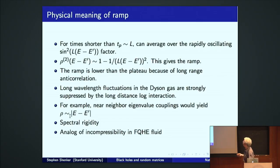Now for time shorter than this break time, we'll call the plateau time L, you can average over this rapidly varying sine squared factor. The pair correlation function is just given by this inverse square. This is what gives the ramp. The ramp is lower than the plateau because the eigenvalues are anti-correlated. They repel. There's a minus sign here.